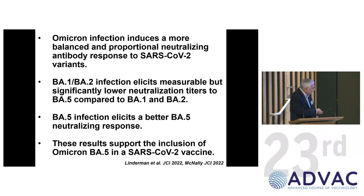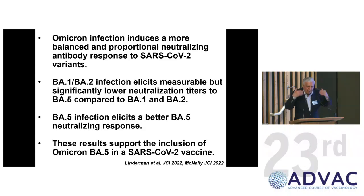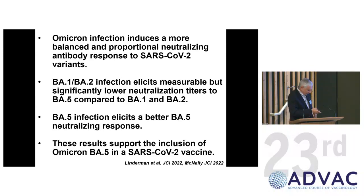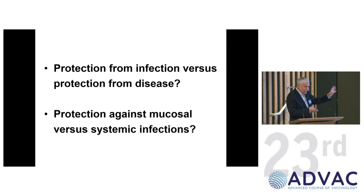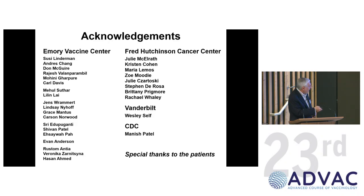The main message is that you definitely want the Omicron variant in your vaccine. The question is whether to also include the Wuhan strain — and I think we should be protecting ourselves against the Omicron variant going forward since new variants will most likely emerge from currently circulating viruses. I should acknowledge the people who did this work and in particular, the patients. Thank you.